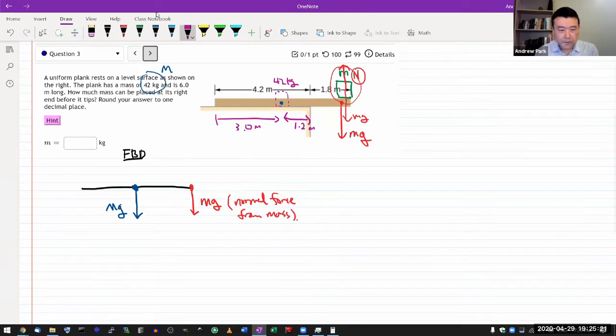Normal force from the level surface that the plank is on. So there must be... Now this is where the question comes up. Where do we draw this normal force? Do we draw it here at the point of the center of mass? Do we draw it here where there's some kind of pivot with the level surface? It's a question.